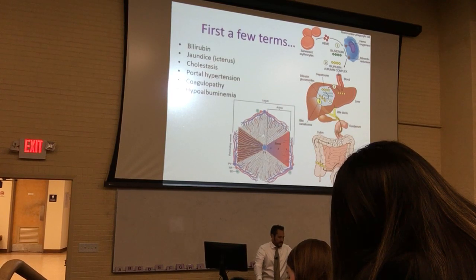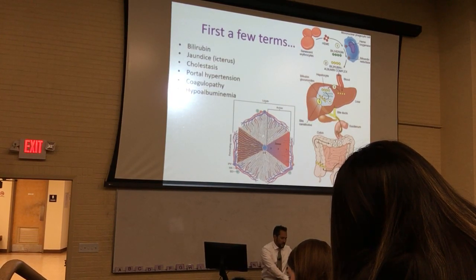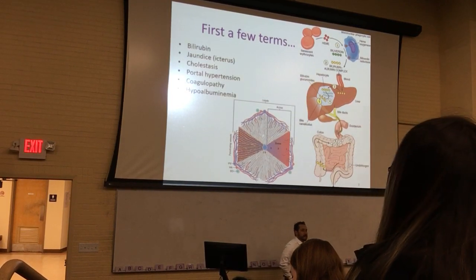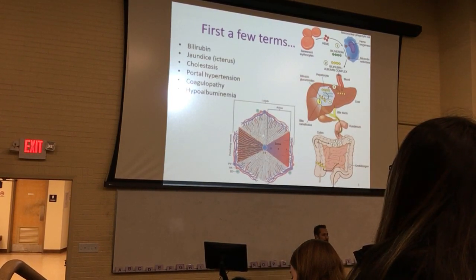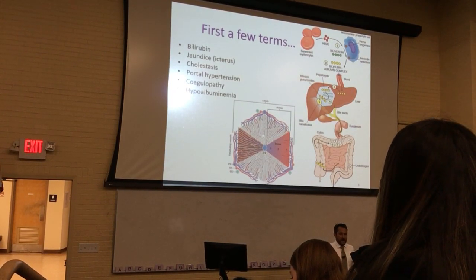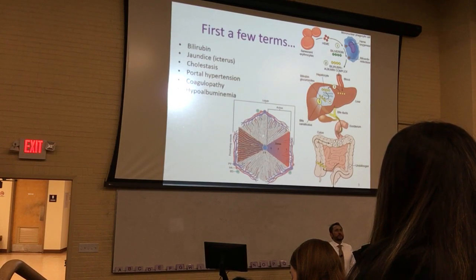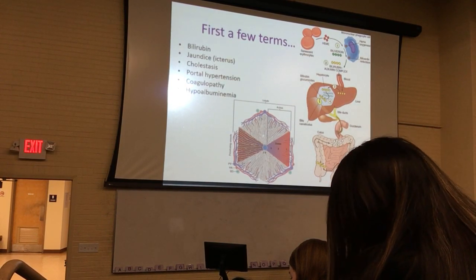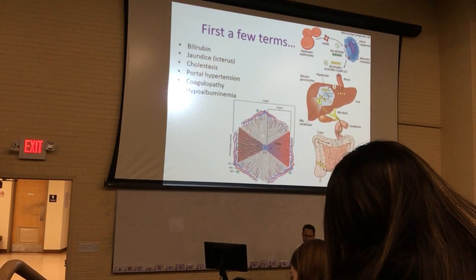Ascites — it's not on the list, but I want to talk about it. Ascites is fluid accumulation in the peritoneum, down in the abdomen. We'll talk about how that occurs in a minute.